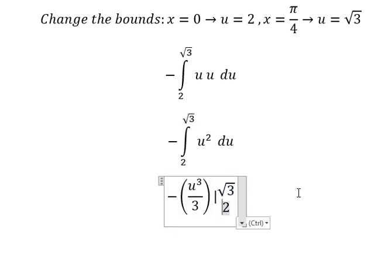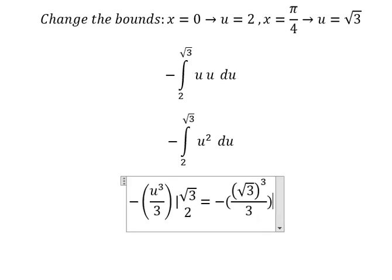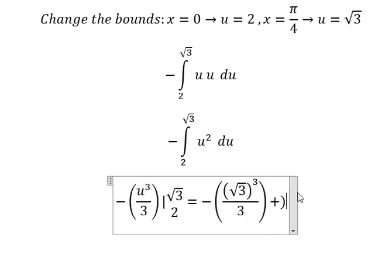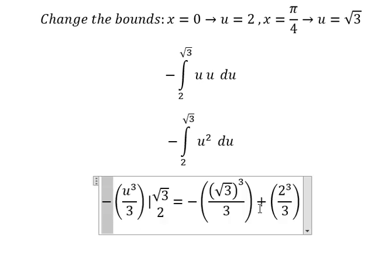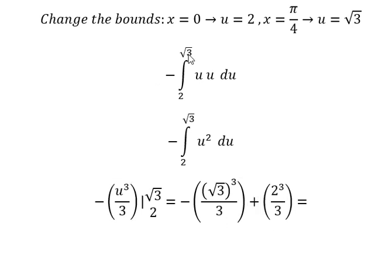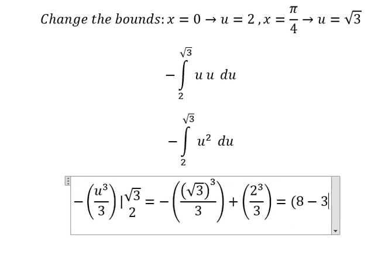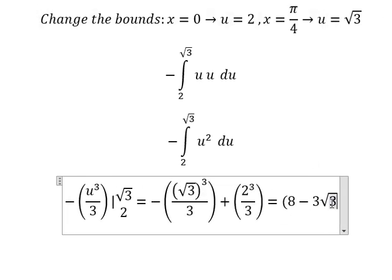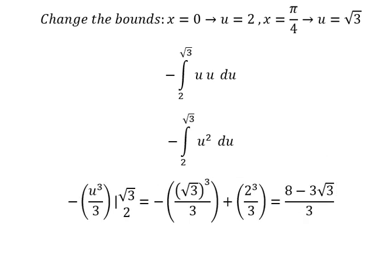Now we have the final answer. Because negative times negative gives positive, we calculate this and we have eight minus three times the square root of three, over three. This is the end — thank you for watching!